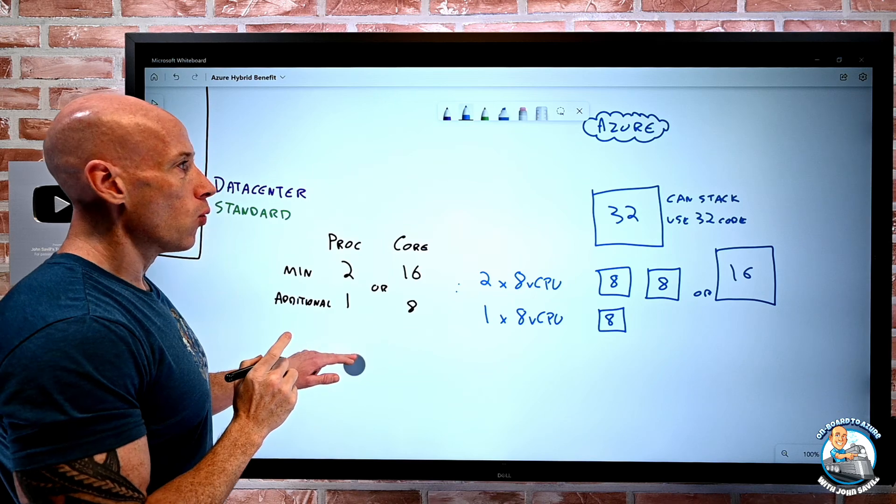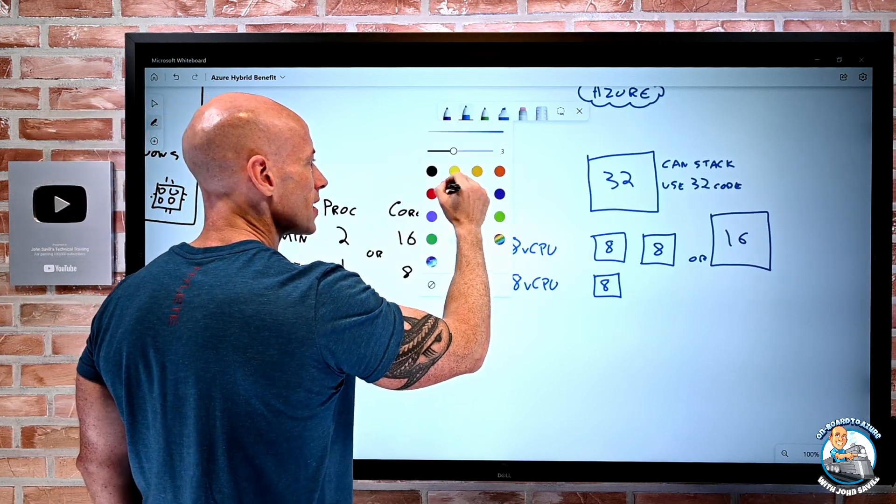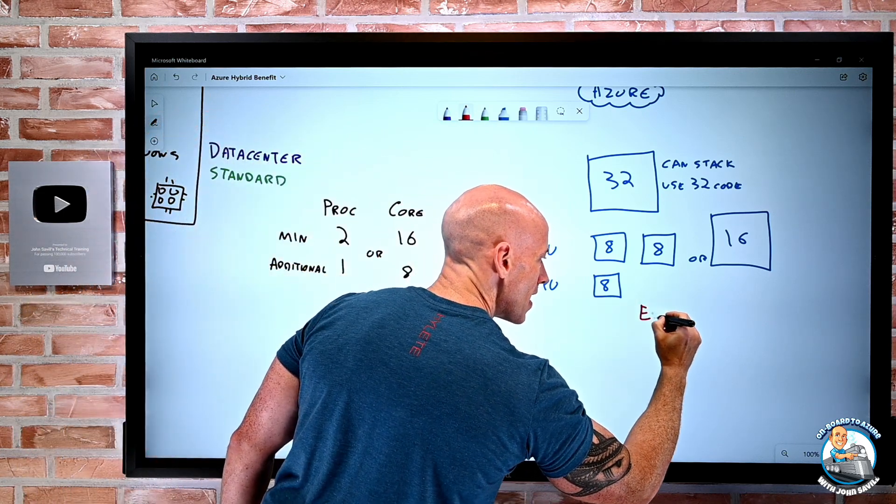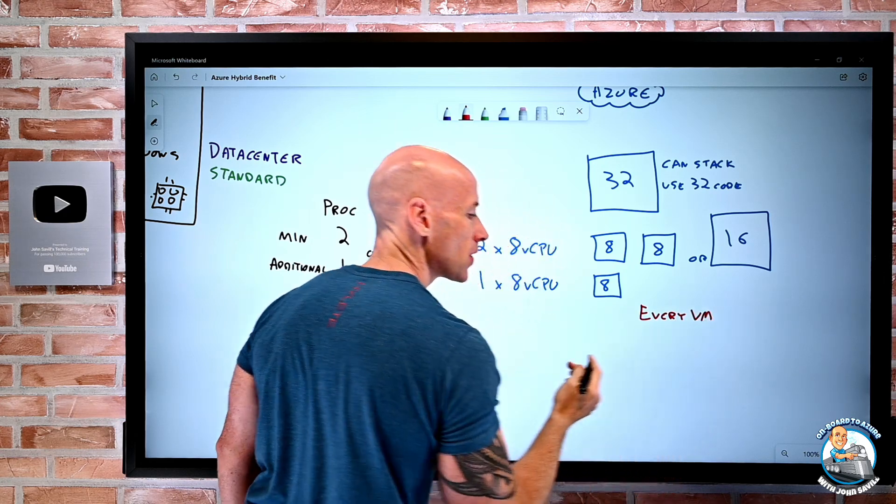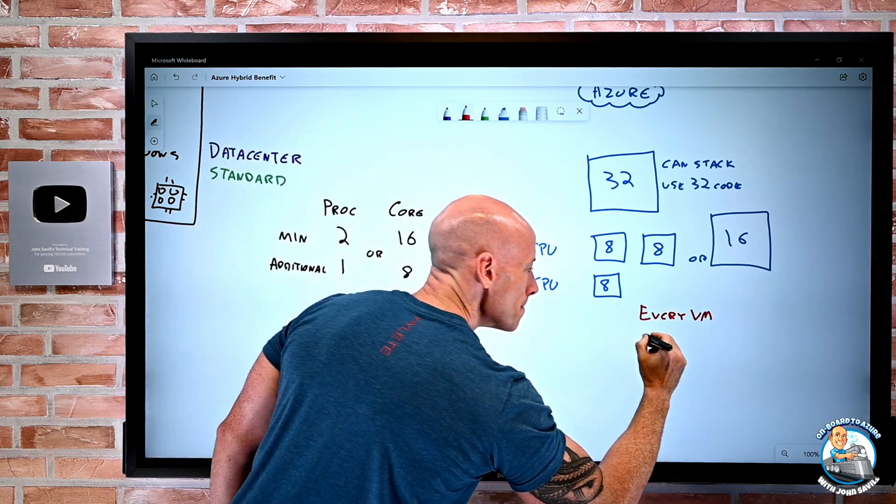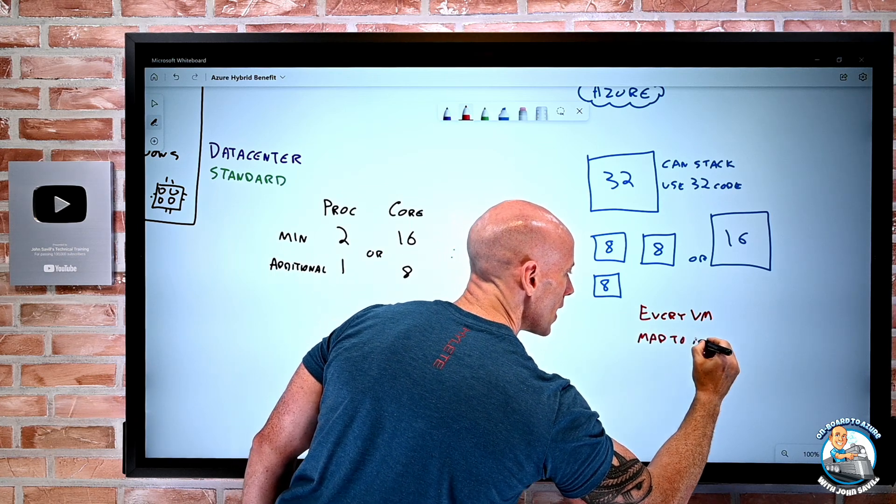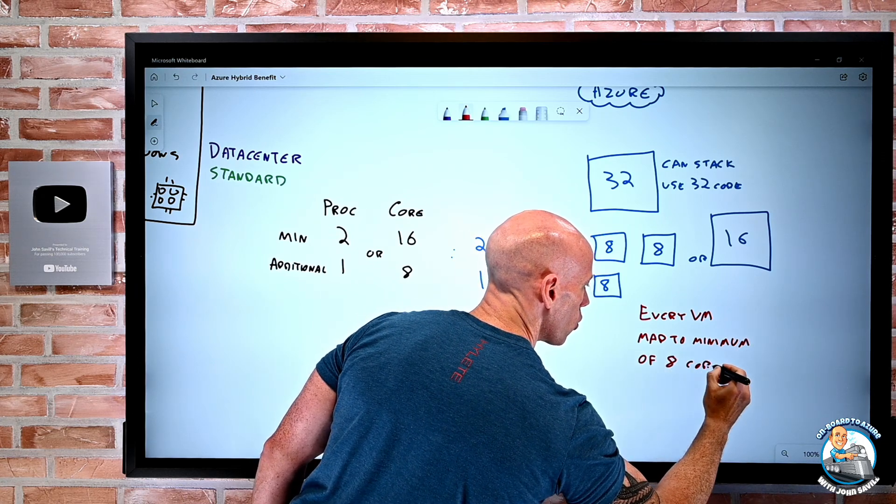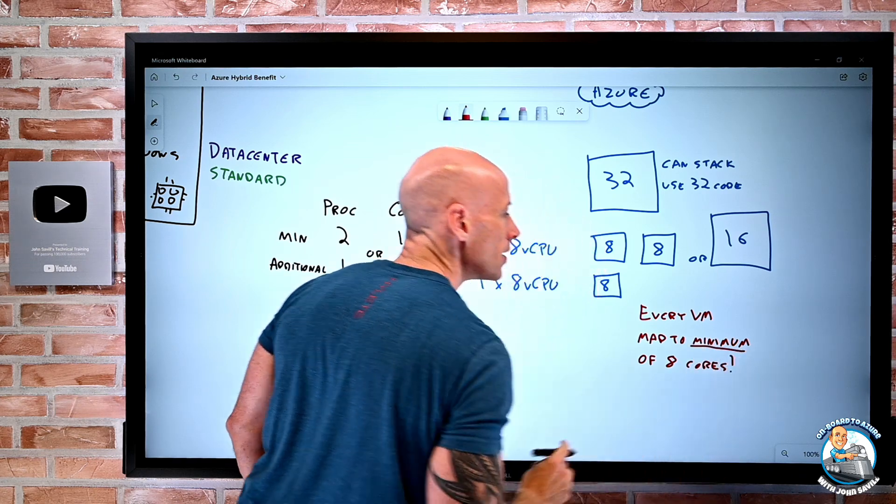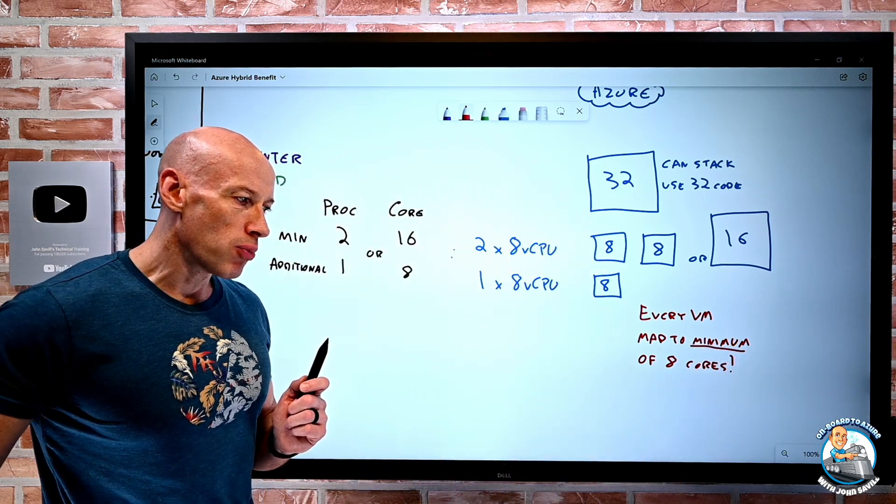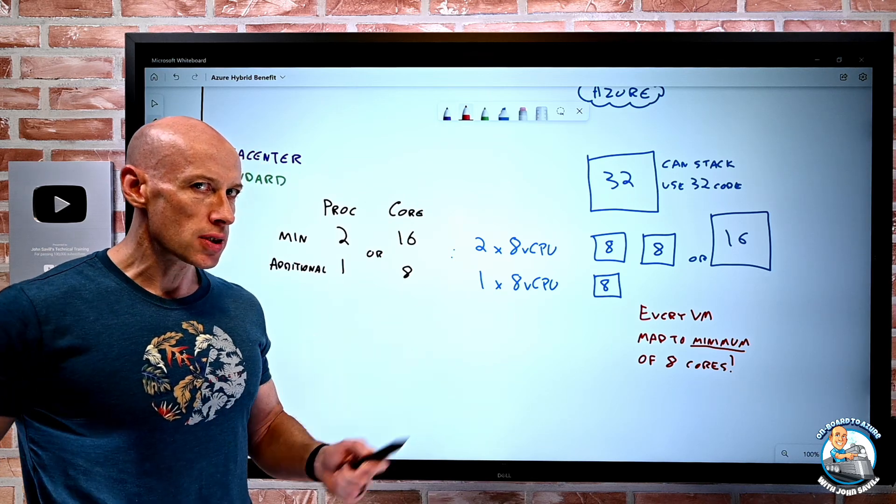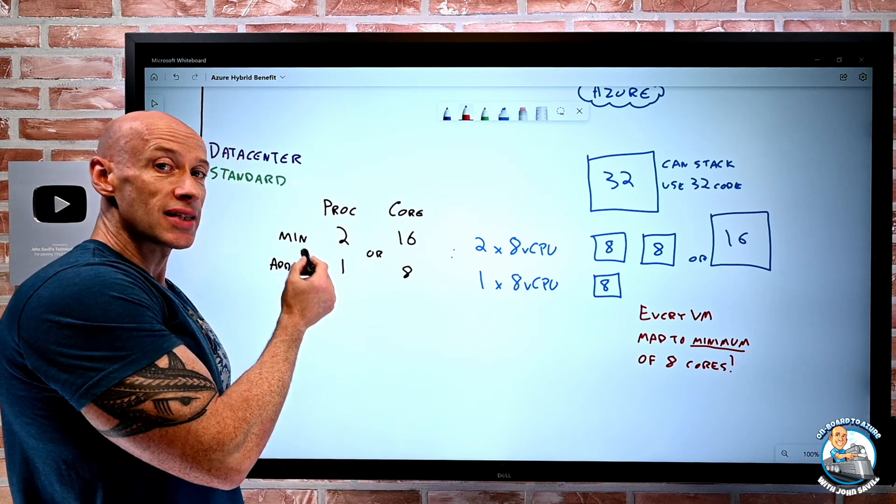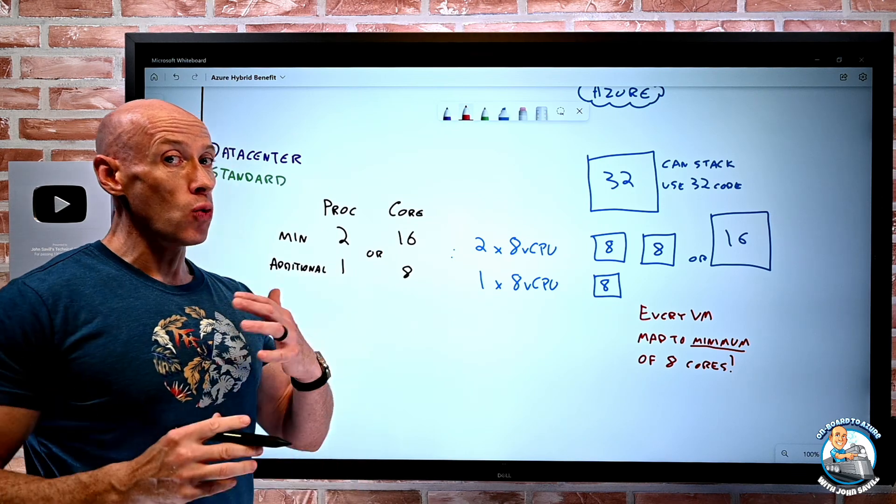Now one super important point about all of this is when I'm using these licenses in Azure, every VM that I'm applying this to must map to a minimum of eight cores. So if I create a virtual machine with two virtual CPUs and I apply the Azure Hybrid Benefit, it is not using two cores worth of on-premise. It's still going to use eight. So that's a really important point to understand.